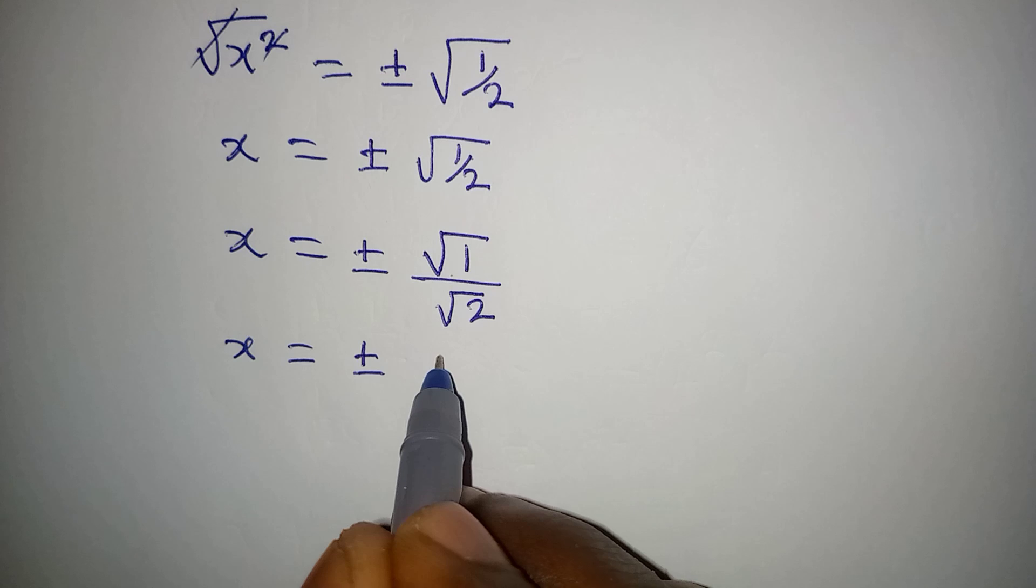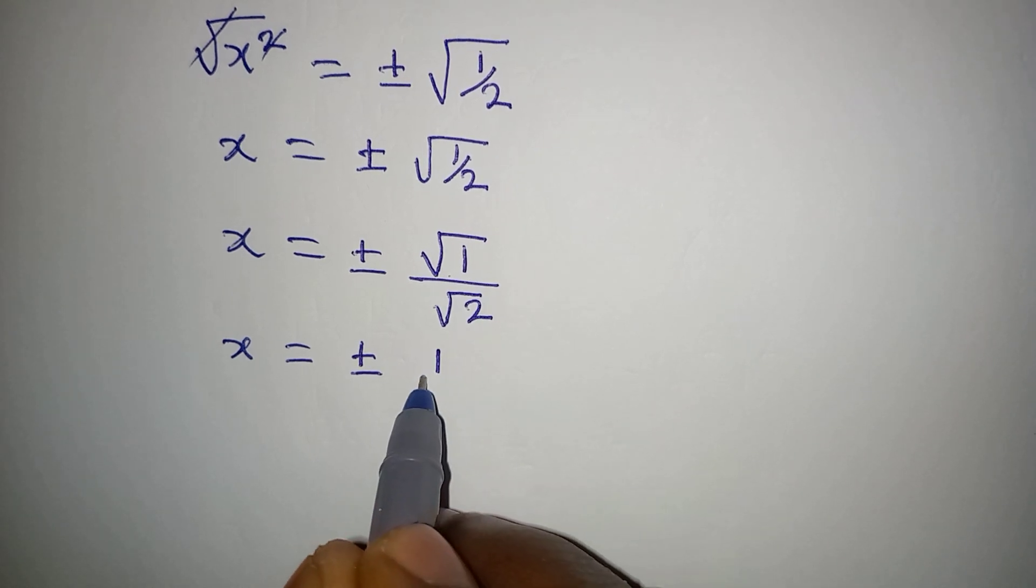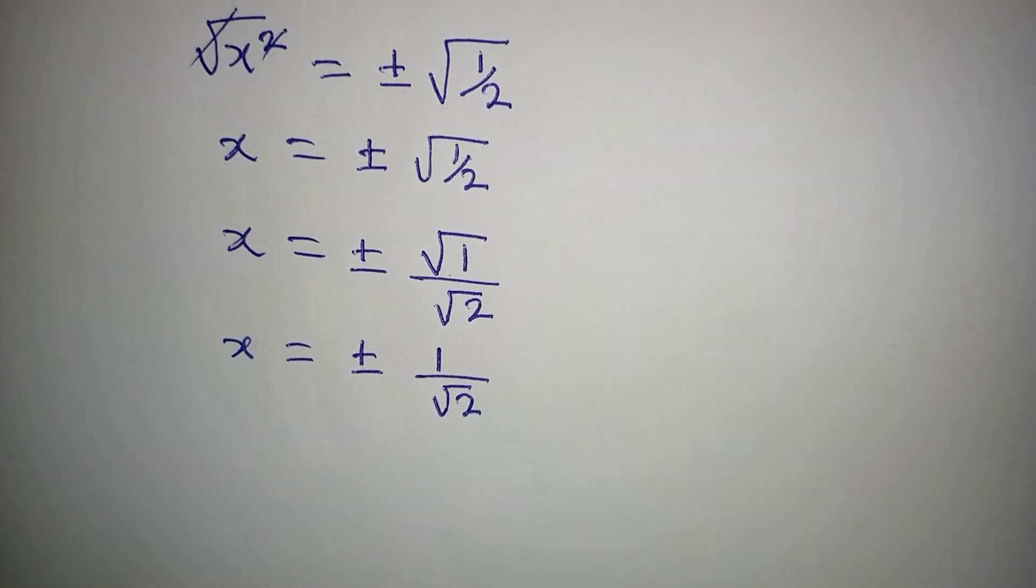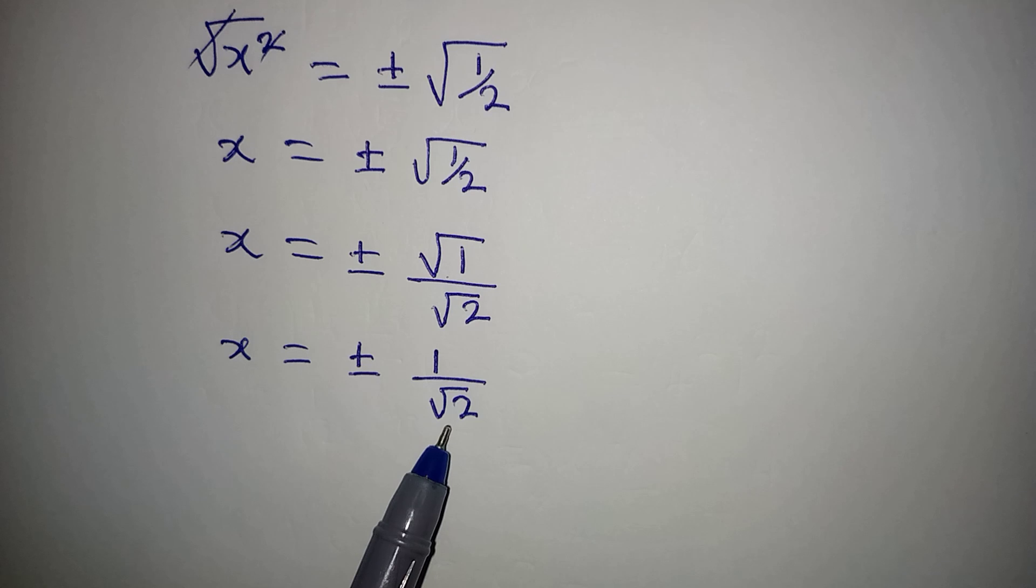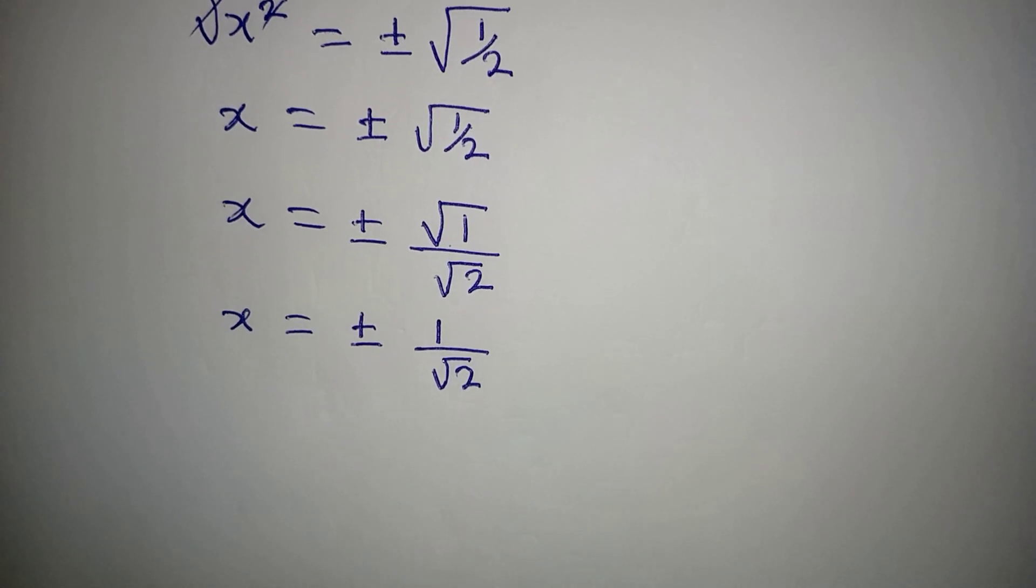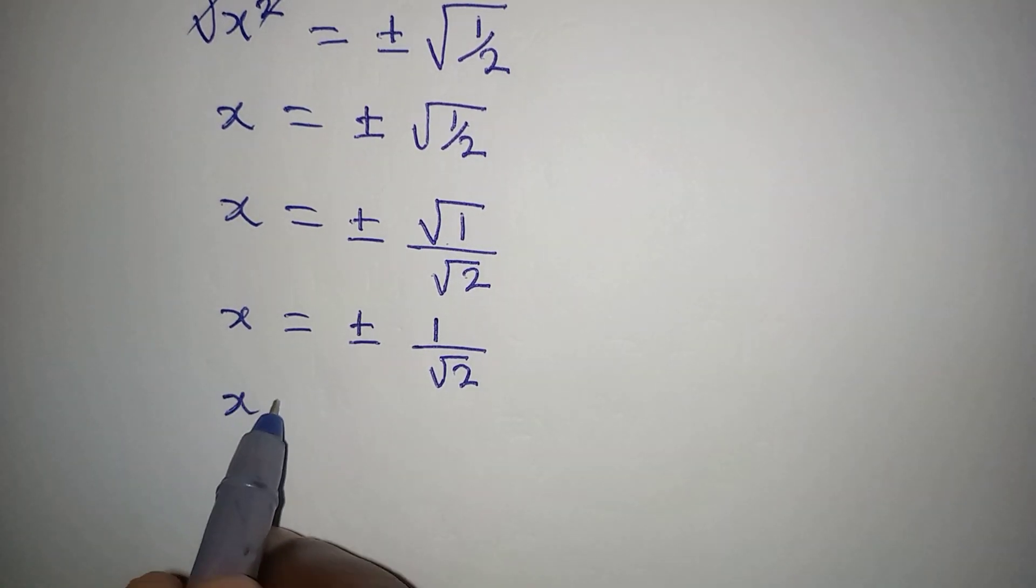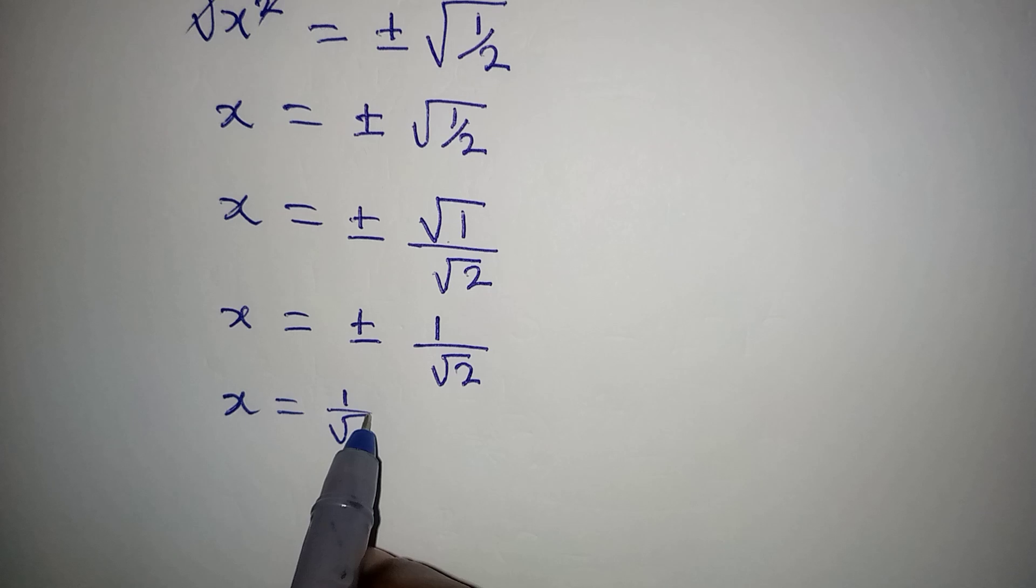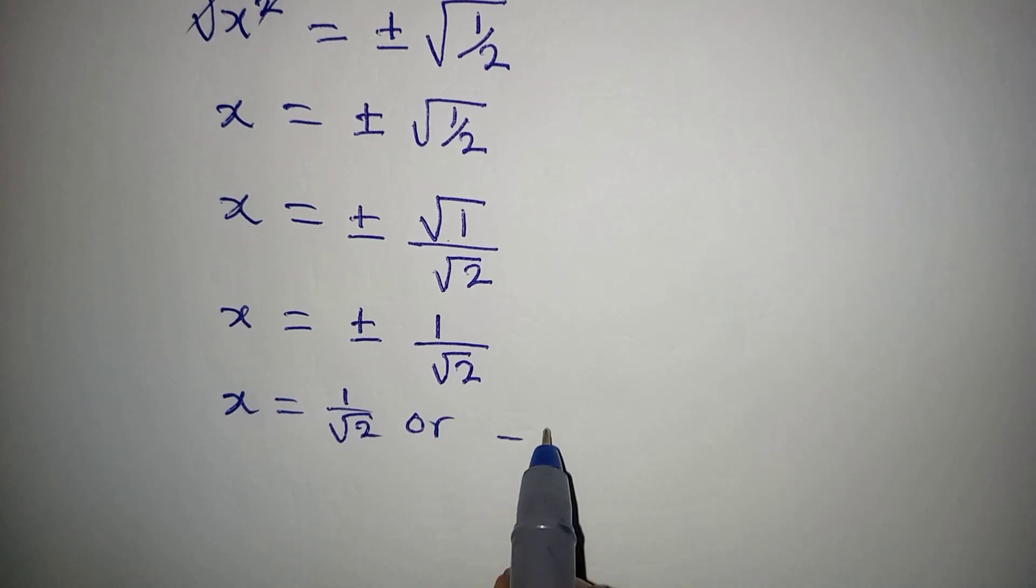square root of 1 is 1 and square root of 2 will come under it because 2 is not a perfect square. Now this means that x is equal to 1 over root 2 or minus 1 over root 2.